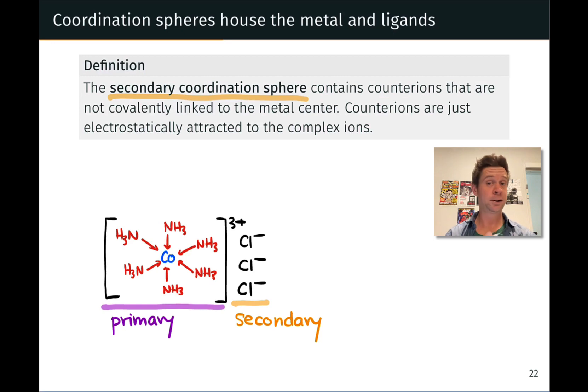But the complex ion will remain intact because of the strength of these cobalt-nitrogen dative bonds. The ammonia ligands will, by and large, remain coordinated to the cobalt center. This is yet another reason why we care about this difference between primary and secondary coordination sphere.